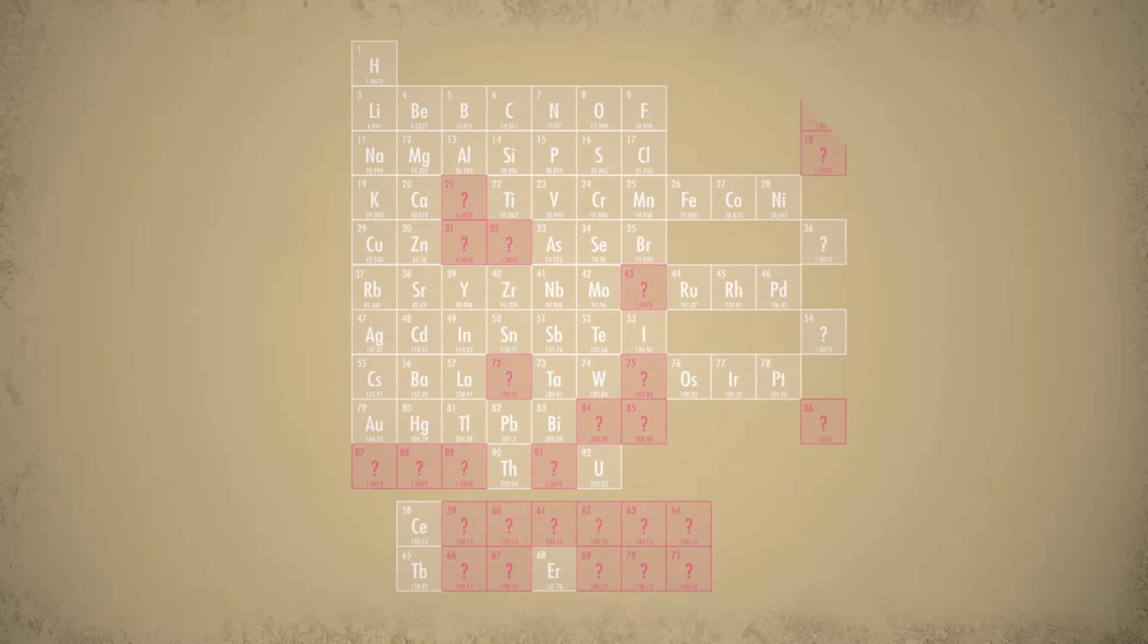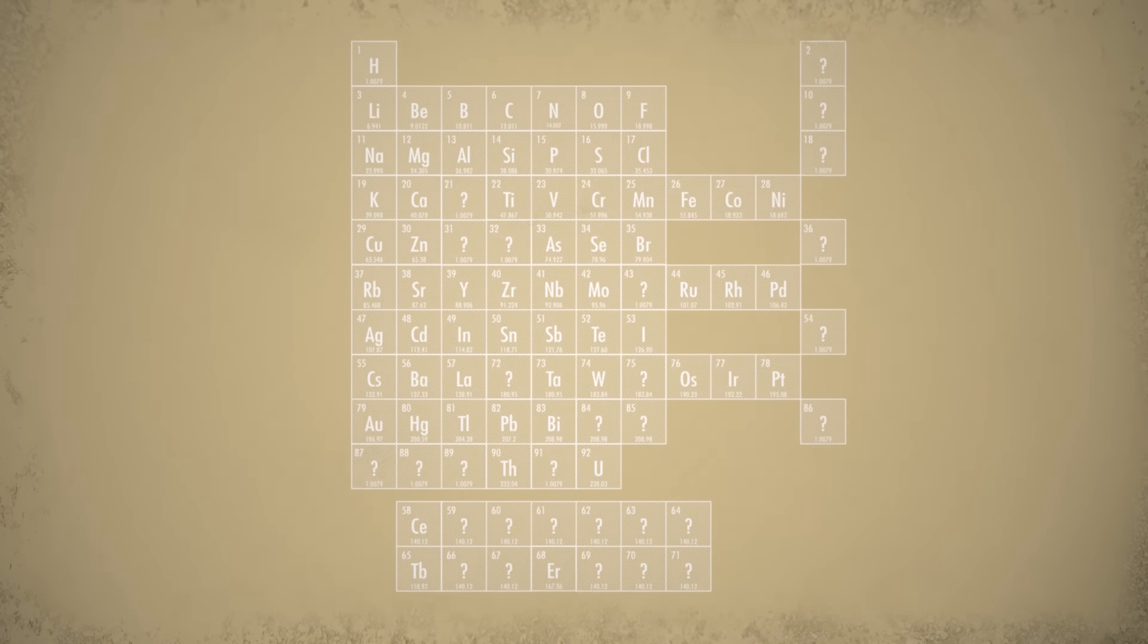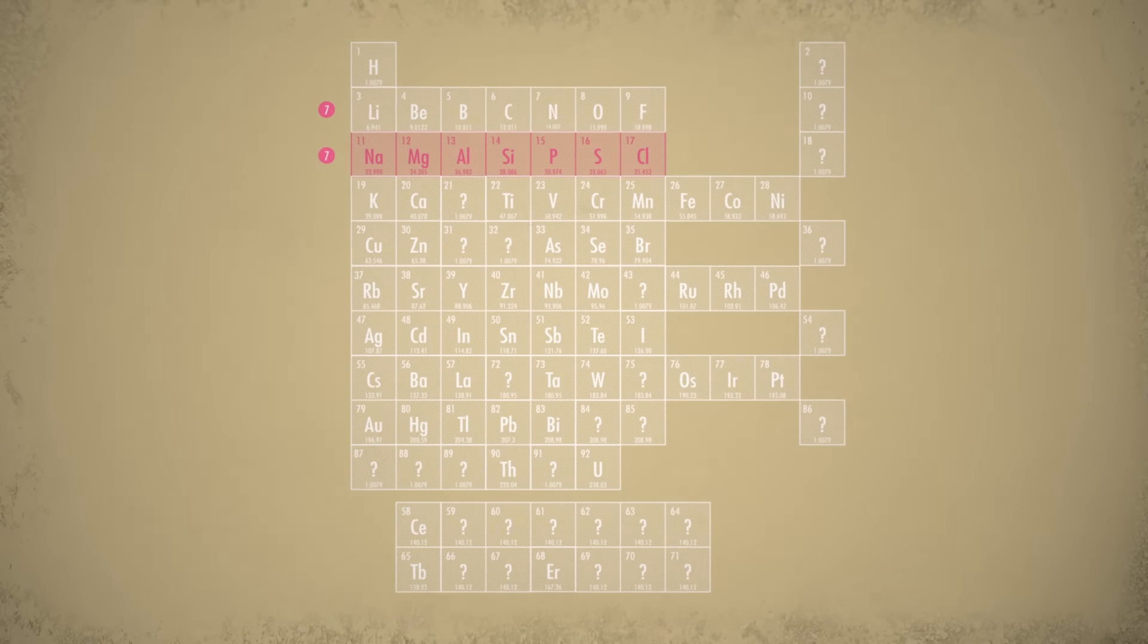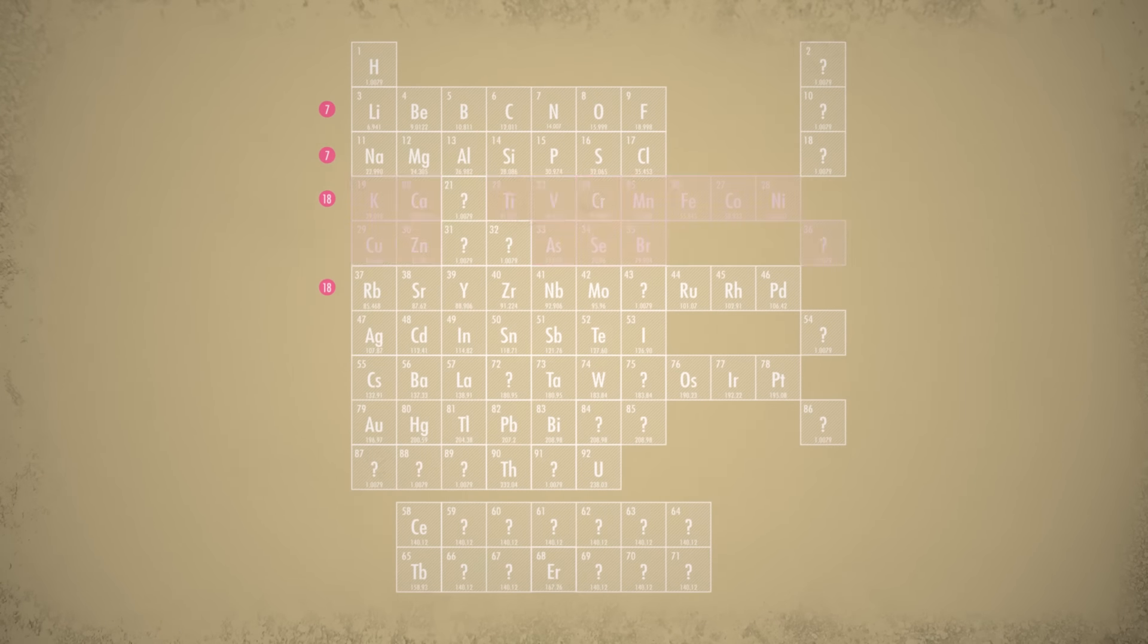Armed with this insight, you insert gaps into the table, and things suddenly fall perfectly into place. Seven element periods for the first two rows, with hydrogen in its own category. Eighteen element periods for the next two rows. You're so certain that you predict the properties of these missing elements.